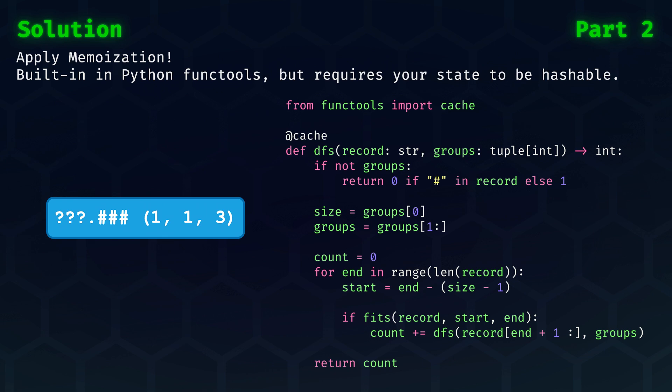This technique is called memoization. It is trivially achievable if you make the arguments of your function hashable. Strings are hashable, and tuples as well. Lists are not, because they are mutable, which is why I opted for tuples already in part 1. Now, if your arguments are hashable, then you can just apply the cache decorator from functools and that's it. You will solve part 2 in a very reasonable amount of time.